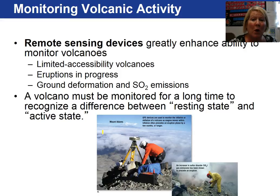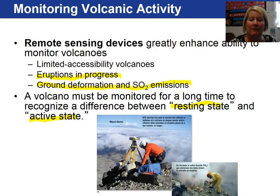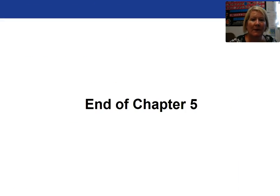Sometimes volcanoes are not easily accessed, especially if eruptions are already in progress — you don't want to get too close. There can be ground deformation and sulfur dioxide emissions that are dangerous to breathe. Scientists in these cases will monitor from a distance. A volcano should be monitored for a long time to be able to recognize a volcano at rest versus one that is active. This concludes our video series for Chapter 5 on Volcanoes.